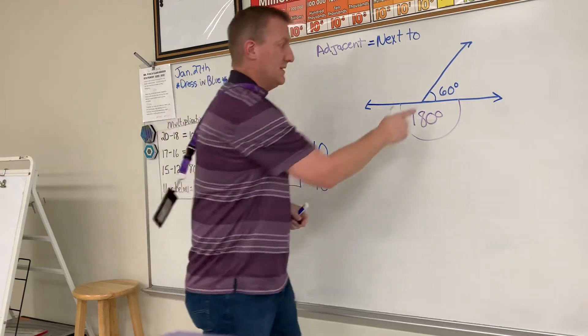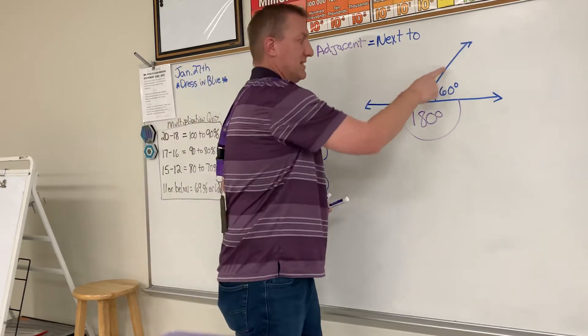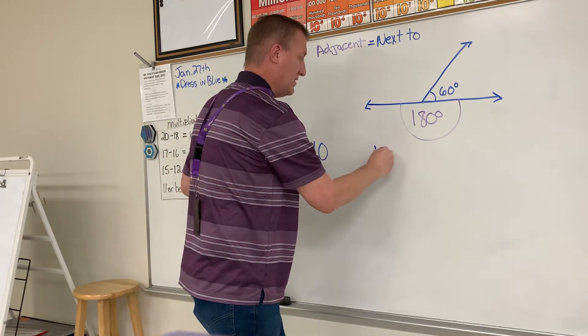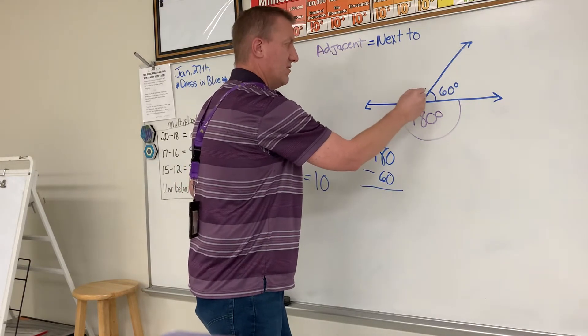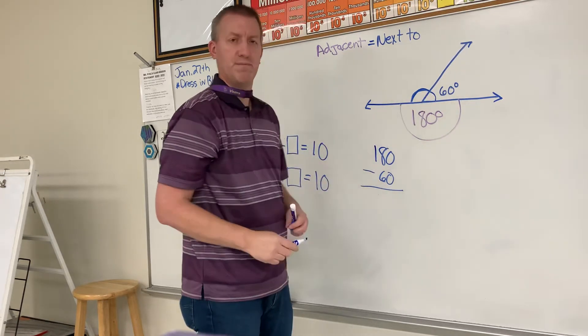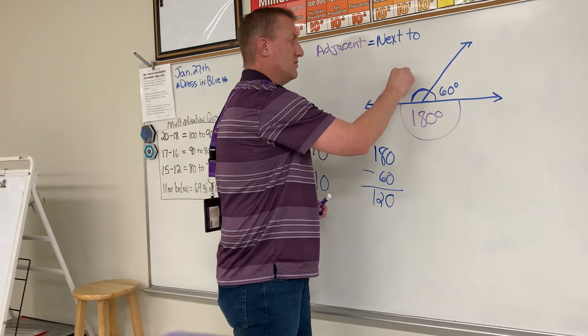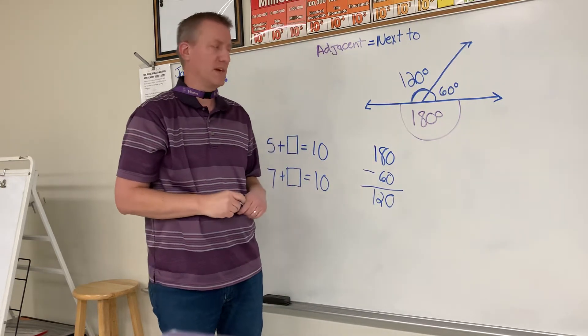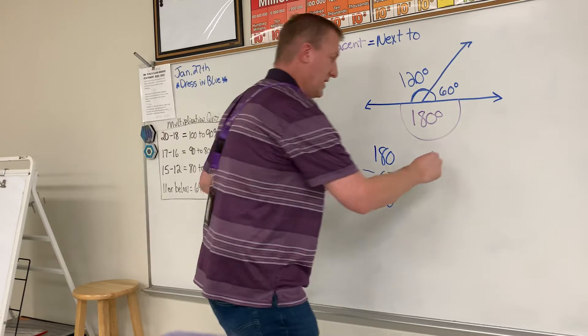So that means from here to here is 180 degrees. So if it's 60 degrees here, that would make this 180 minus 60, and that would give us this angle right here. Okay, so 180 minus 60 would be a 120 degree angle.